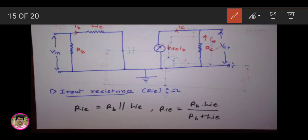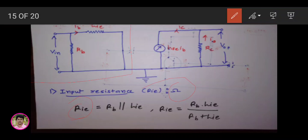Input resistance — we have shown a little about input resistance. The input resistance is present at the input. In this case, there was an input with RBA and hie at the input. This resistance has been placed in parallel — RBA and hie are in parallel.